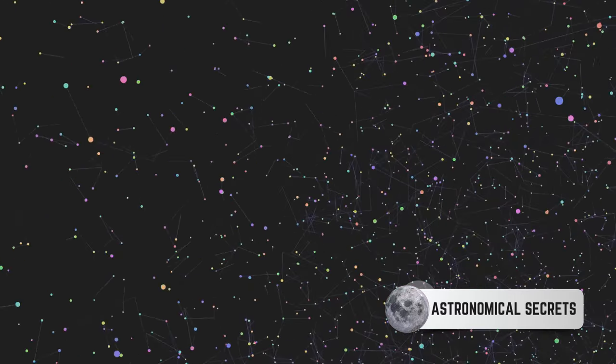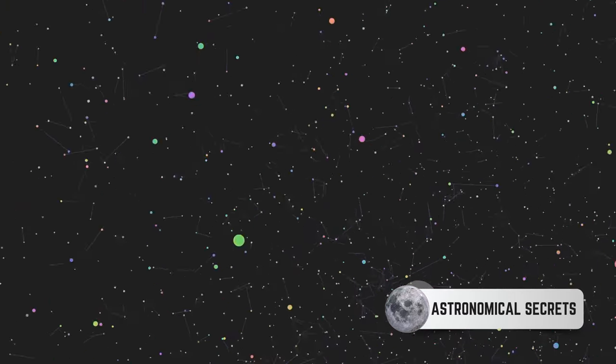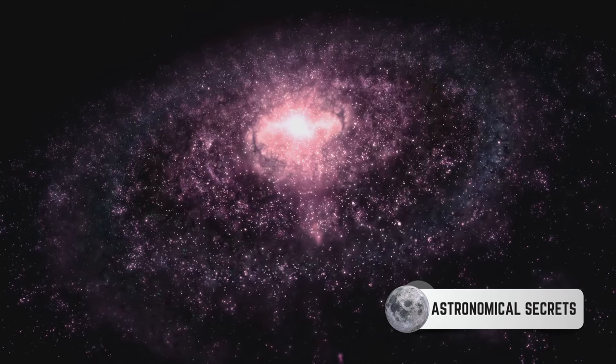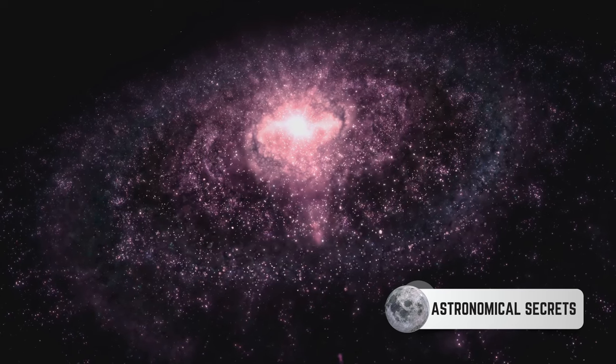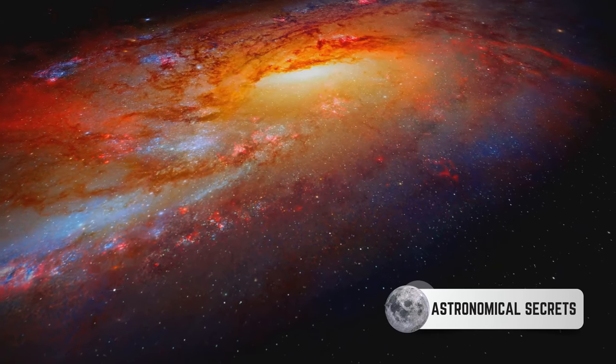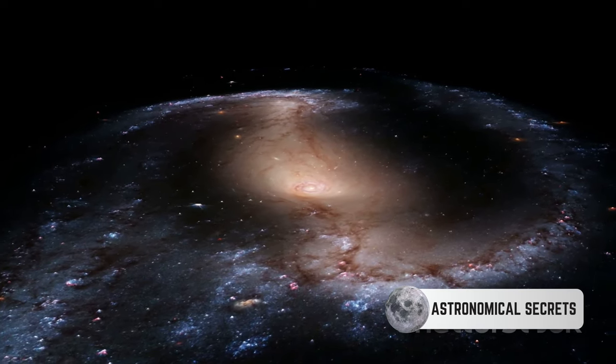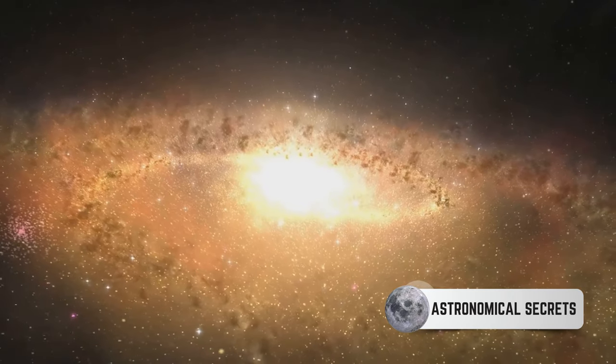Each one is a city of stars, hosting billions, even trillions of celestial bodies. Imagine this. Astronomers estimate that there are about 2 trillion galaxies in the observable universe. That's a 2 with 12 zeros. It's a number so large it's almost impossible to comprehend.